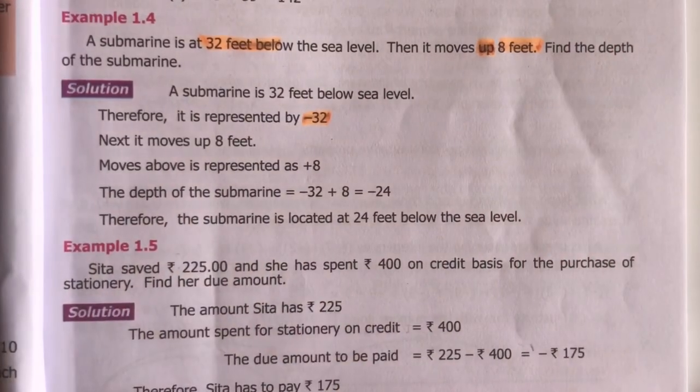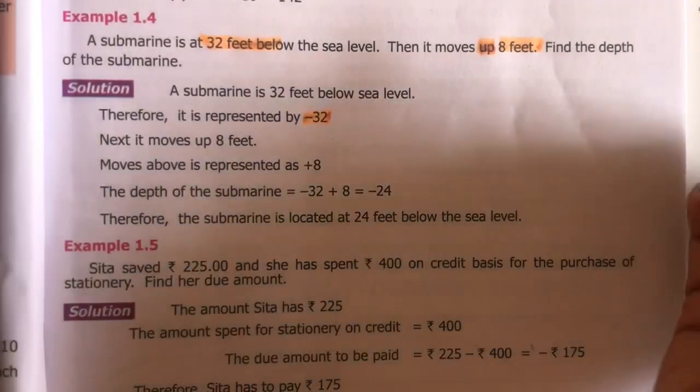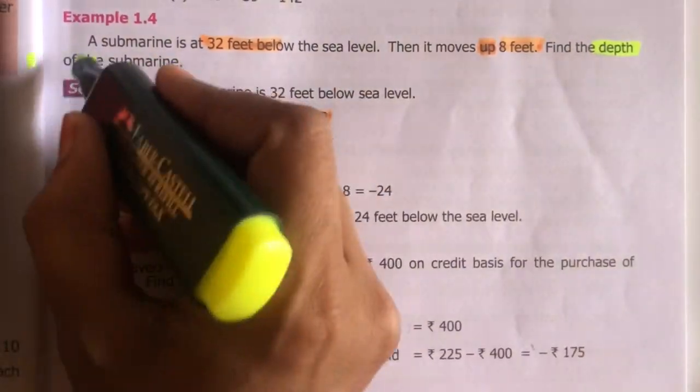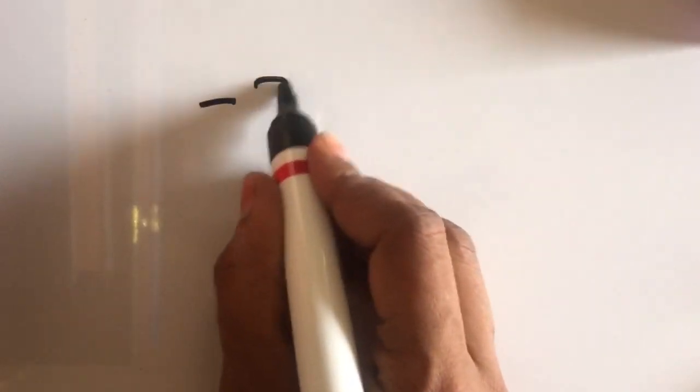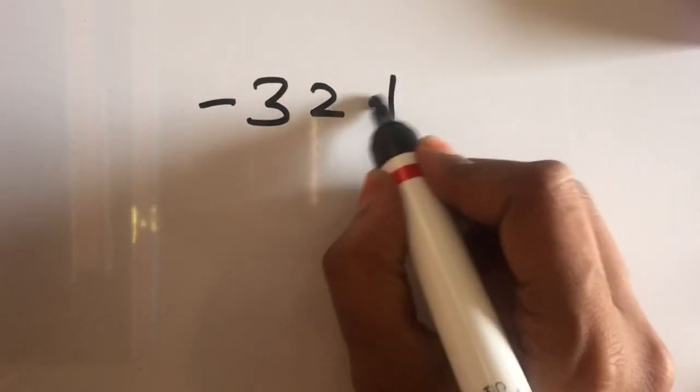So, now at what position? Find the depth of the submarine. At what place? The submarine is here now. So, for that minus 32, then plus 8.